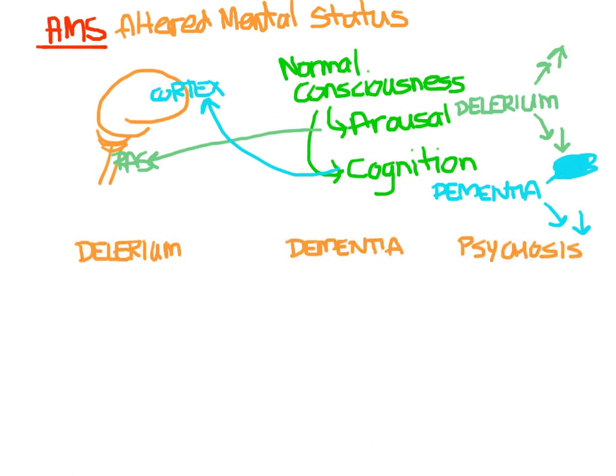Now let's look at three definitions: delirium, dementia, and psychosis. Dementia tends to be slow in onset and progressive — it just gets worse and worse with time. Think of your patient with Alzheimer's: they're awake, their vital signs are usually normal, but as time goes on they slowly get less and less functional. They can't remember your name, and soon they can't even remember how to breathe. It's usually an organic, degenerative cause.